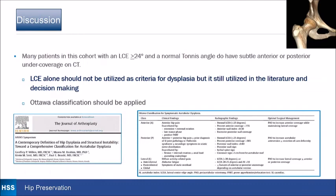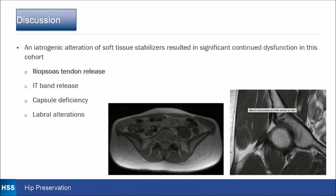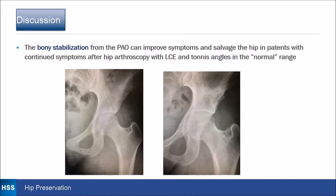In discussion, many patients in this cohort with an LCE greater than or equal to 24 and a normal tonus angle do have subtle anterior-posterior undercoverage on CT, perhaps magnified by prior hip arthroscopy. LCE alone should not be utilized as criteria for dysplasia, though it is still used in the literature. We should consider more three-dimensional classification such as the Ottawa classification. Iatrogenic alteration of soft tissues — specifically after iliopsoas tendon release, IT band release, capsular deficiency, and labral alterations — resulted in significant continued dysfunction. However, bony stabilization from the PAO can improve symptoms and salvage the hip in patients with continued symptoms after hip arthroscopy, including those with LCE and tonus angle in the quote-unquote normal range.